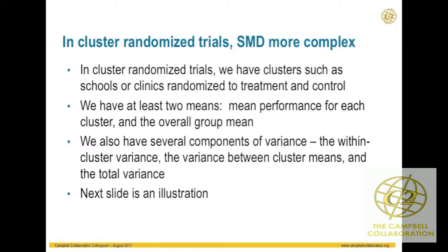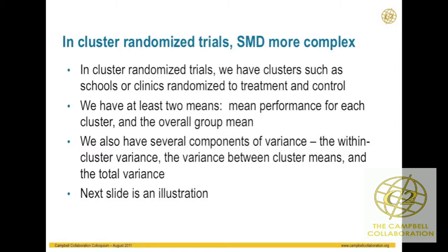But in clustered randomized trials, our standardized mean difference is going to be more complex. If we have individuals within clusters — schools, clinics, or groups — we randomly assign those schools or classrooms or clinics to a treatment and control group. Now we have a number of different means: the means of each cluster, the overall mean for all treatment group clusters and all control group clusters. And then we have all kinds of variances — variances within each cluster, the variance among the cluster means, and the overall total variance of all the observations.